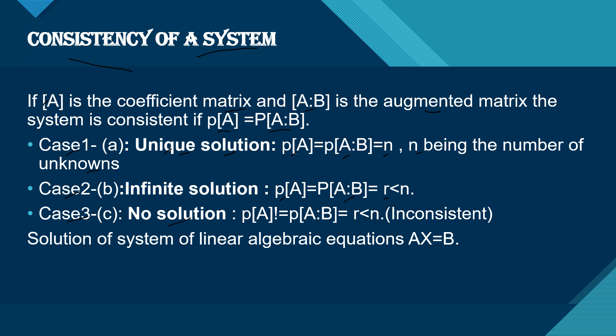Case 3: No solution. If ρ(A) ≠ ρ[A|B], the system is inconsistent. The solution of a system of linear algebraic equations is represented as AX = B.